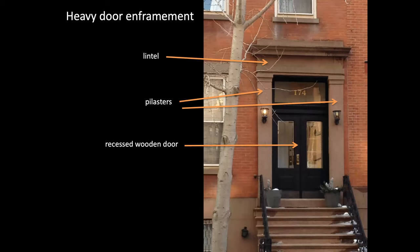Often you'll see a doorway made out of brownstone, which we haven't talked about yet. Brownstone is a type of sandstone quarried in Connecticut and New Jersey — plentiful locally and relatively cheap compared to marble. It's very easy to carve, which we'll see in the Gothic Revival and the Italianate. Here you can see the lintel up top, and in the federal period we saw colonnets on either side of the door — here they're heavier and called pilasters. And then you see a recessed wooden door.